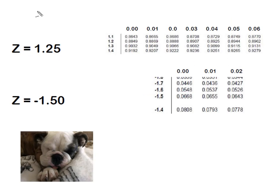So I've got my area associated with 1.25 which ended up being 0.8944 from the table, and my negative 1.50 gave me that area of 0.0668.